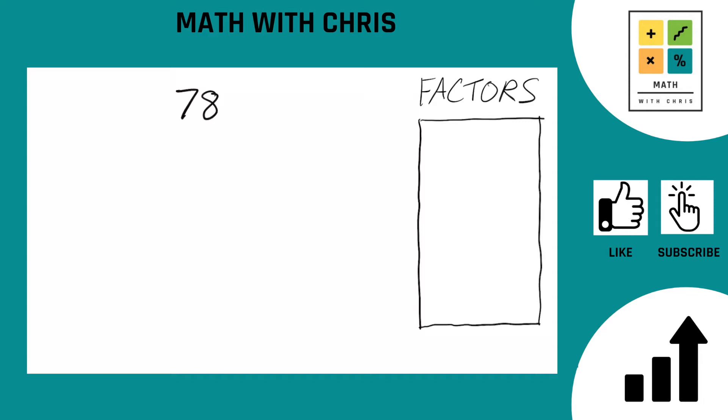We're going to find the factors of this. We're going to use a factor tree. Before we start, we always bank the two easiest factors to find of any number. That's one and the number itself, which is 78.